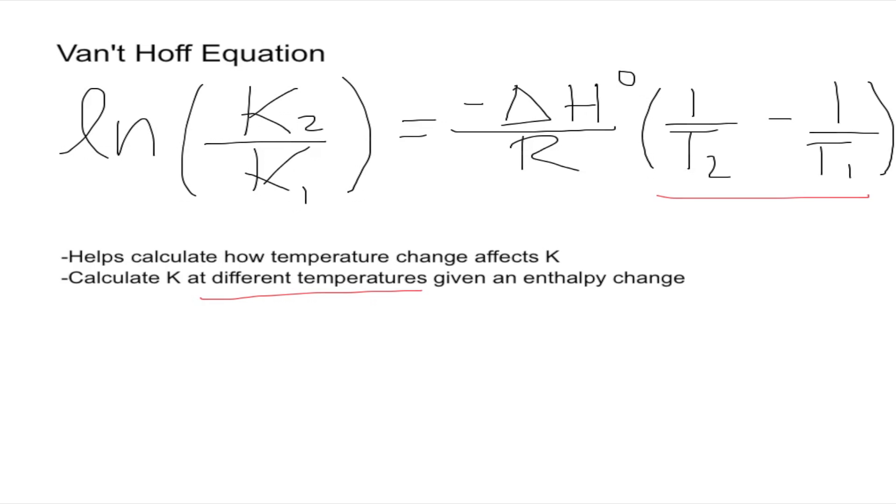One more thing about the equation is that we need an enthalpy change. It says that calculate K at different temperatures given an enthalpy change, and that's because it goes right here. If we don't have the enthalpy change, we can't use this equation.